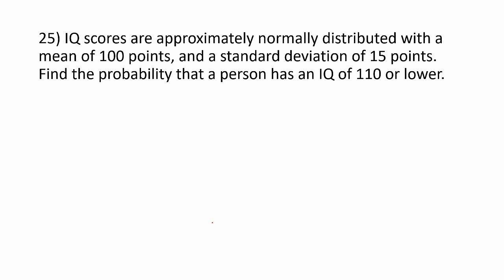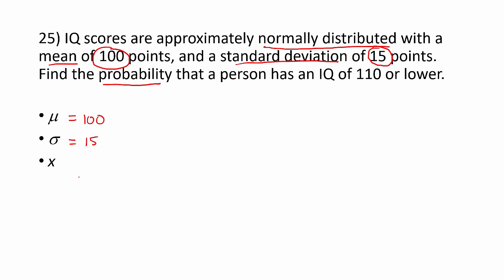IQ scores are approximately normally distributed with a mean of 100 points and a standard deviation of 15 points. Find the probability that a person has an IQ of 110 or lower. We have a mean of 100 points and a standard deviation of 15 points, so we're looking at a normal probability problem where X is less than or equal to 110.